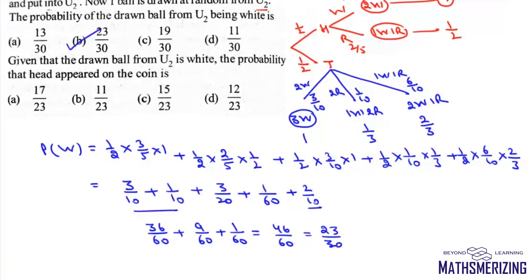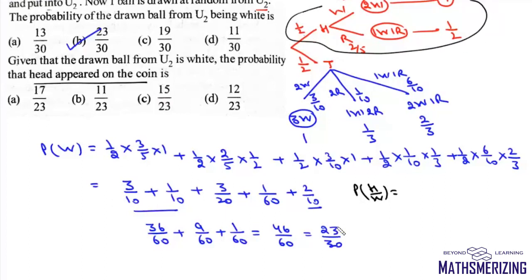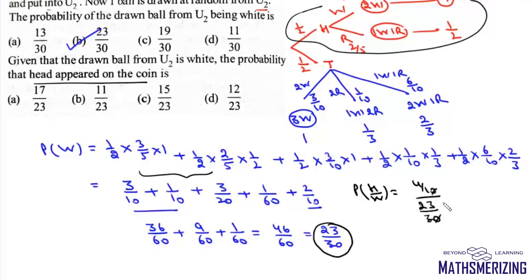The second part: given that the drawn ball from U2 is white, find the probability that head appeared on the coin. This is Bayes' theorem, so the heads case goes in the numerator and the total probability in the denominator. The probability contribution from heads is the first two terms, which is 4/10. So it is (4/10) / (23/30) = 12/23. That is option D.